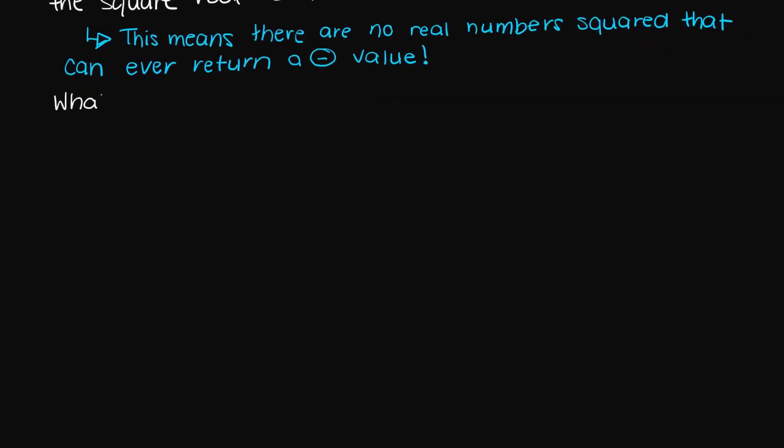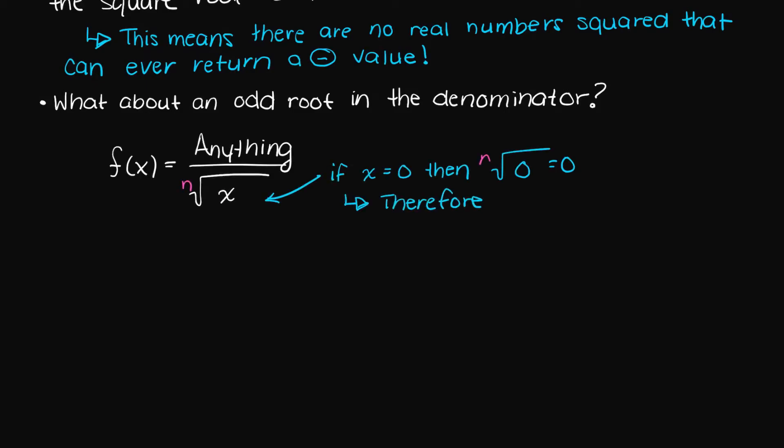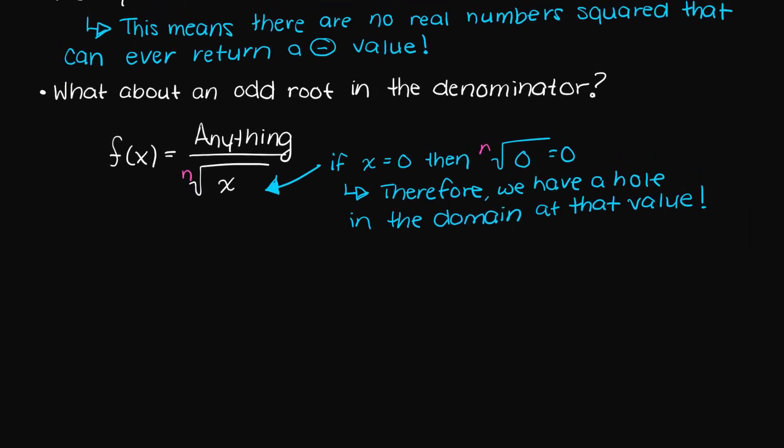Another important thing you should note is that an odd root in the denominator will create a hole if there is a zero under the radical, as we would now have a zero in the denominator, which we determined was one of the reasons our function could become undefined.